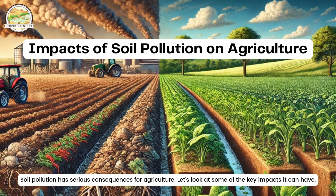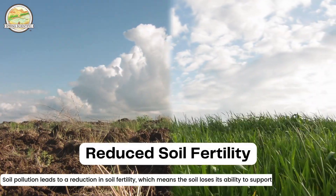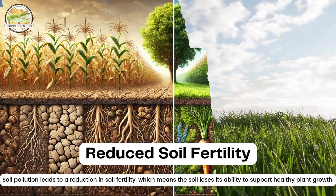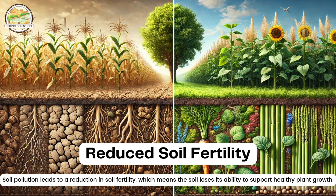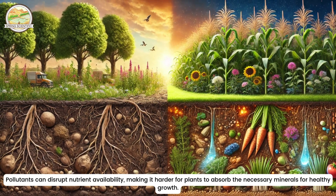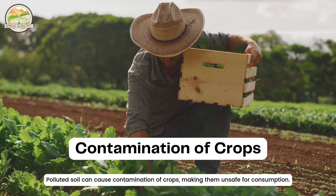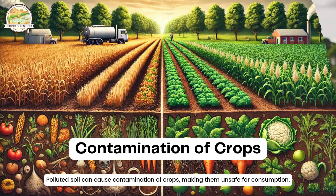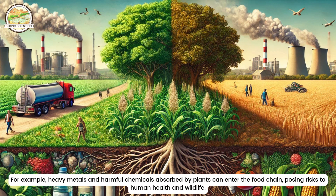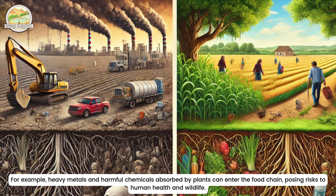Soil pollution has serious consequences for agriculture. The first impact is reduced soil fertility — pollution leads to a reduction in soil fertility, meaning the soil loses its ability to support healthy plant growth. Pollutants can disrupt nutrient availability, making it harder for plants to absorb the necessary minerals. The second impact is contamination of crops: polluted soil can make crops unsafe for consumption, as heavy metals and harmful chemicals absorbed by plants can enter the food chain, posing risks to human health and wildlife.